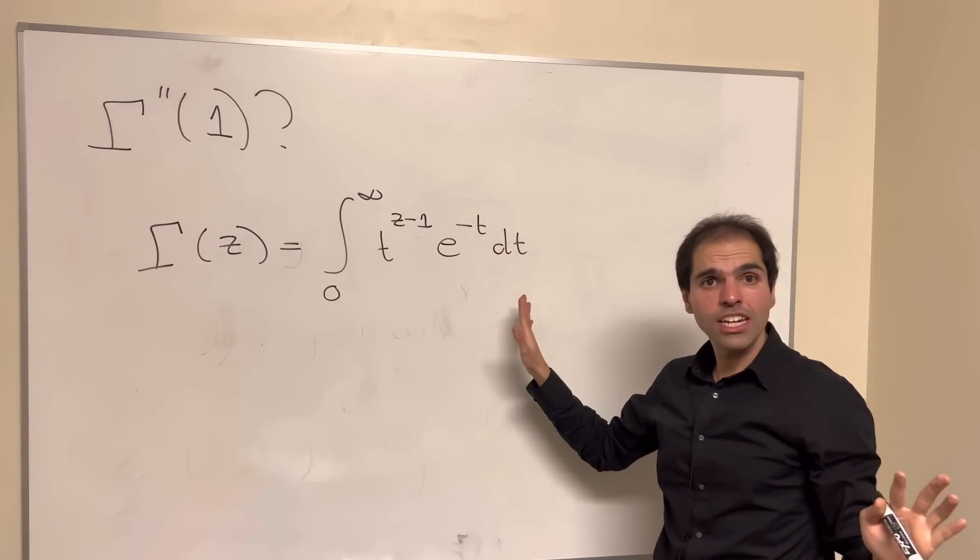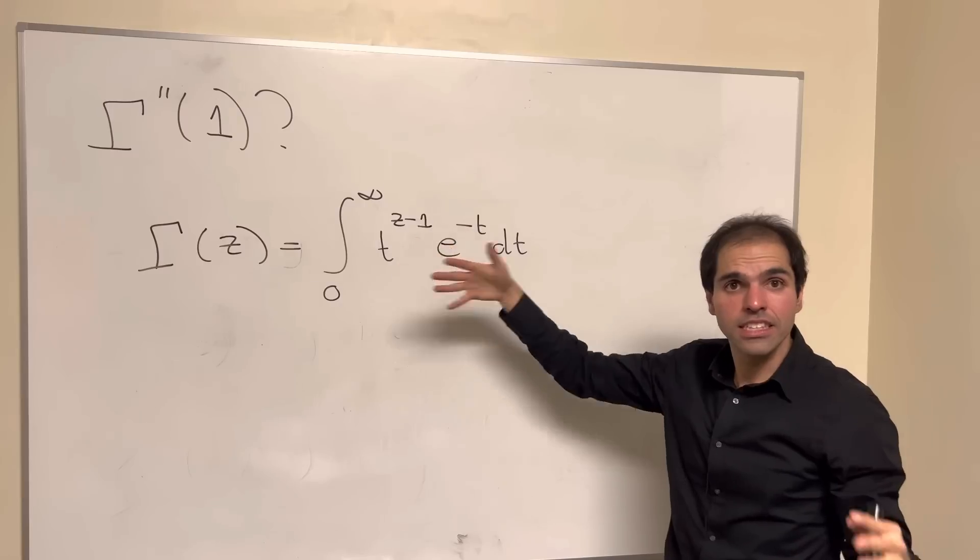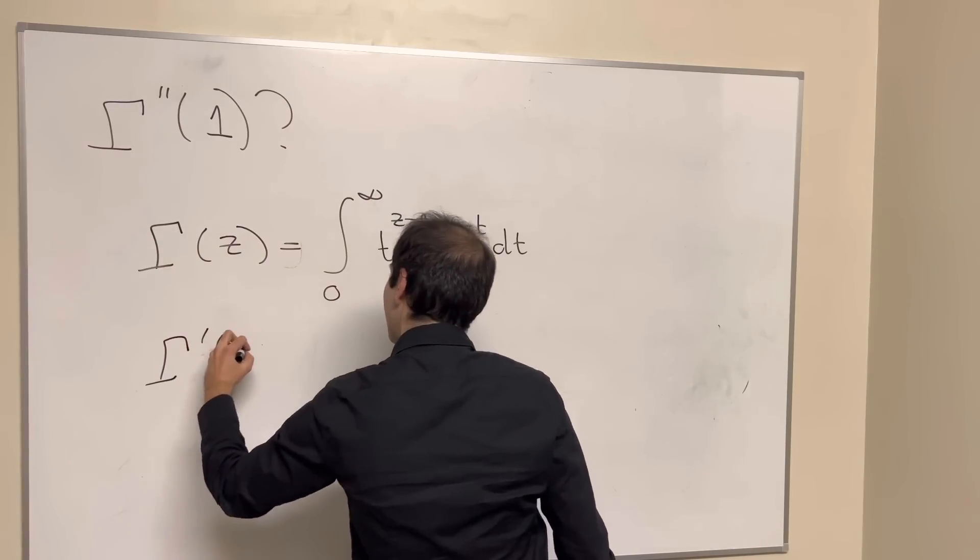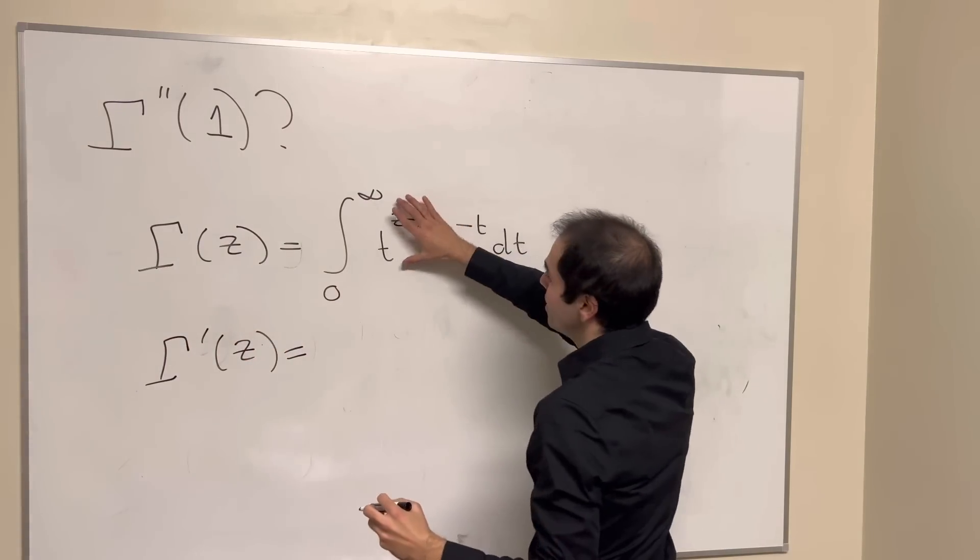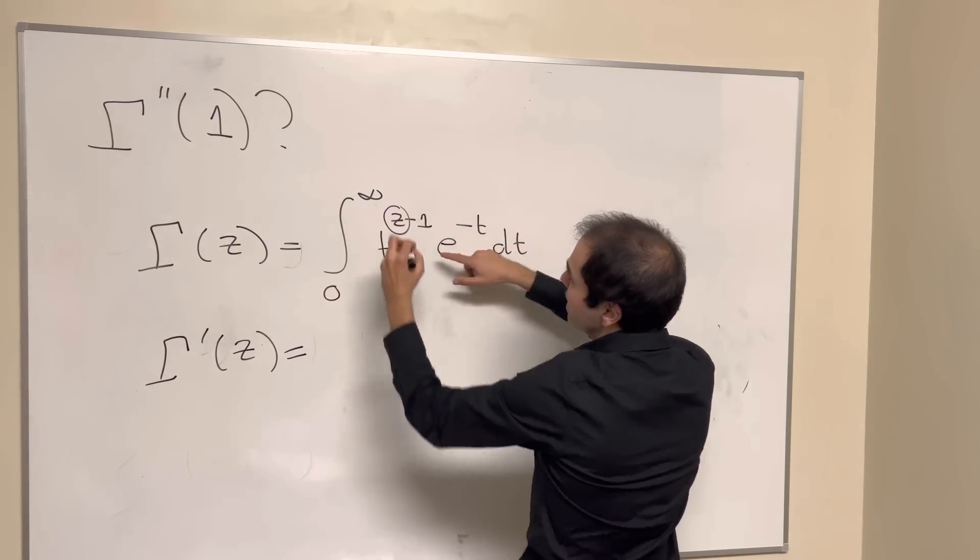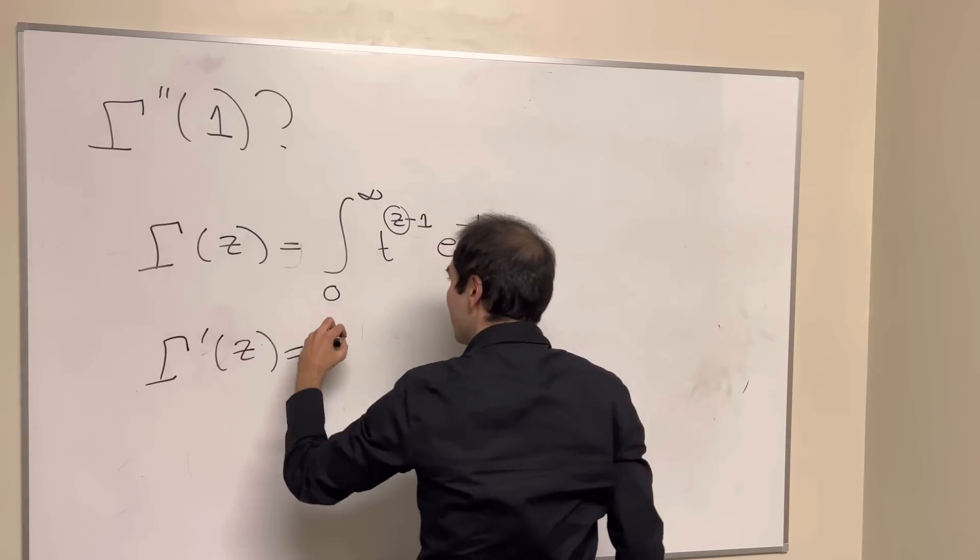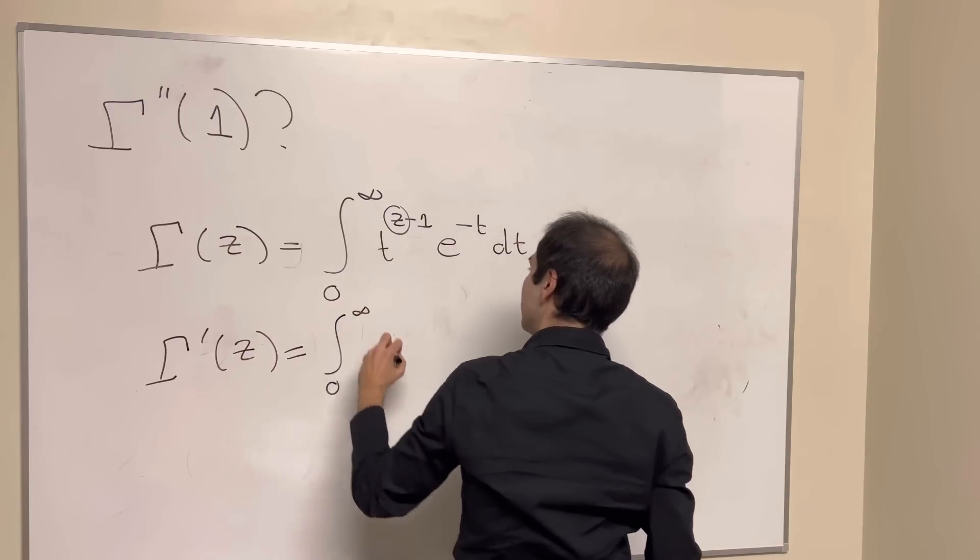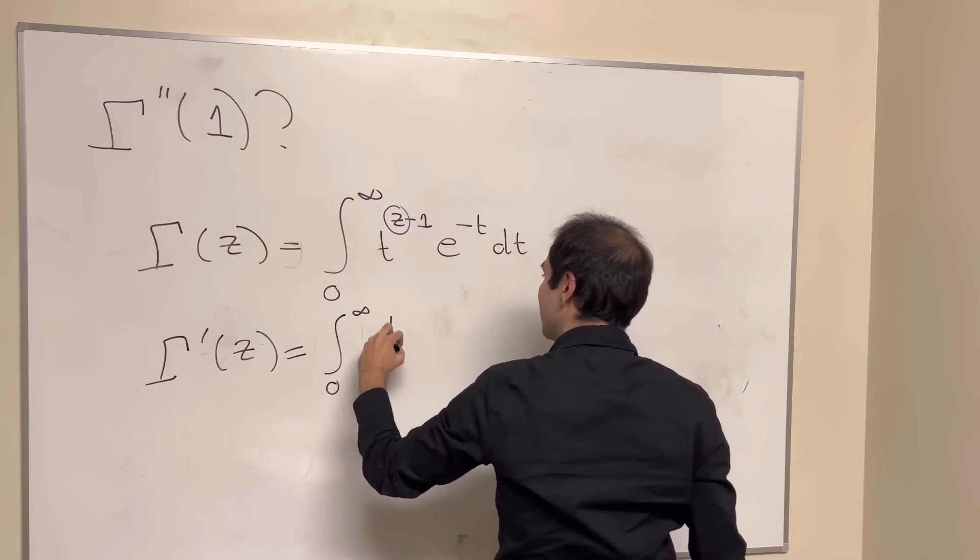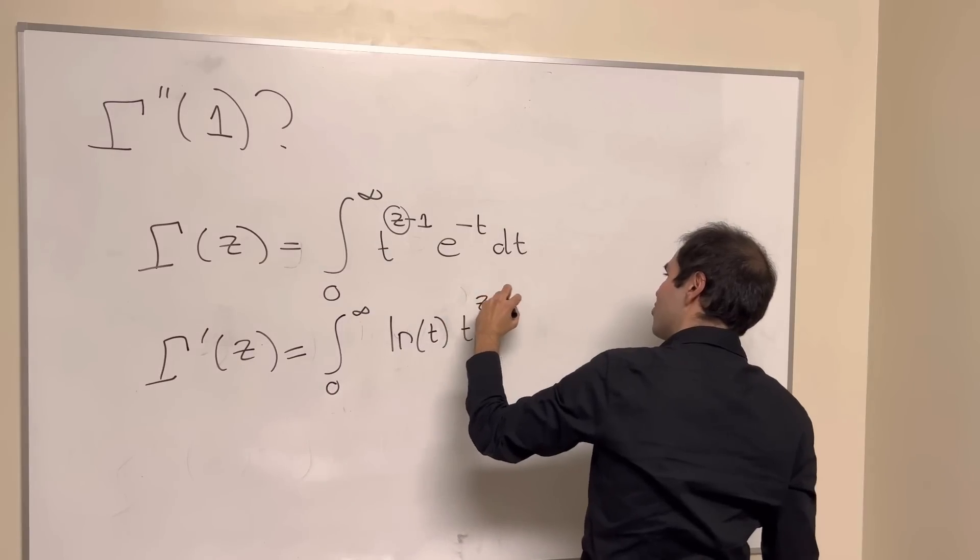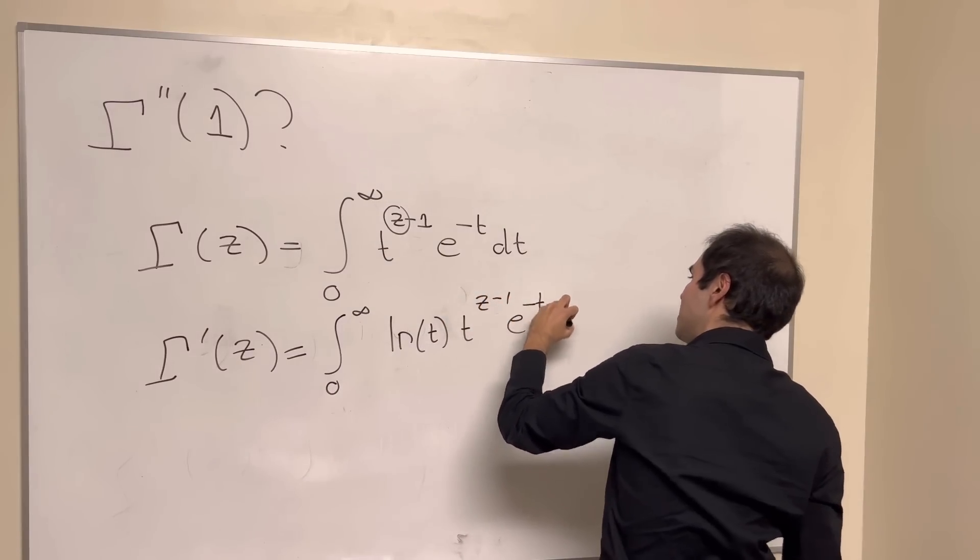And by the way, I want to mention in passing what is the derivative of gamma at 1. Well, to differentiate the gamma function, here z is in the exponent, so you use this exponent rule for derivatives. So this is integral from zero to infinity of ln of t, t to the z minus 1, e to the minus t dt.